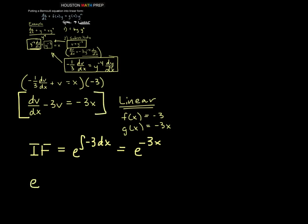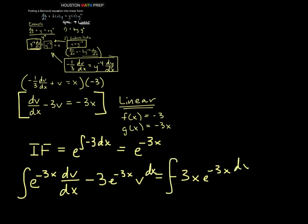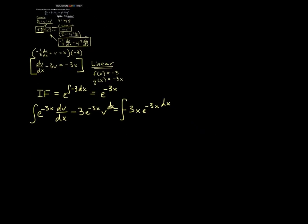So that gives us e to the minus 3x dv/dx minus 3 e to the minus 3x v equals negative 3x e to the minus 3x. So we're very much in linear land now. So if you know linear equations well, then you should be on your way here. So what we want to do is then integrate both sides dx, and then we will be near a solution.